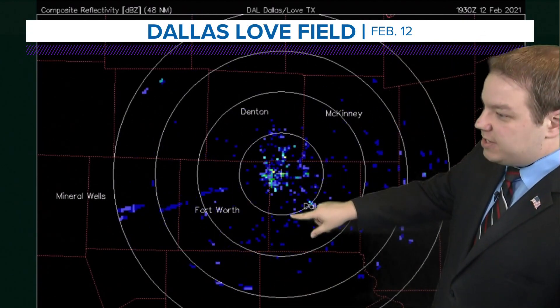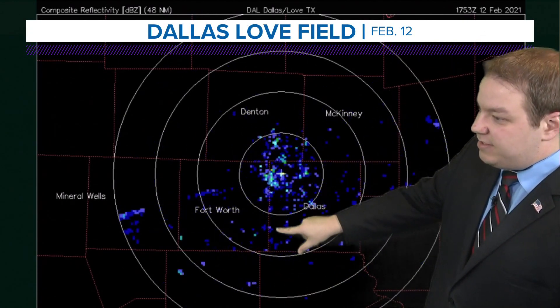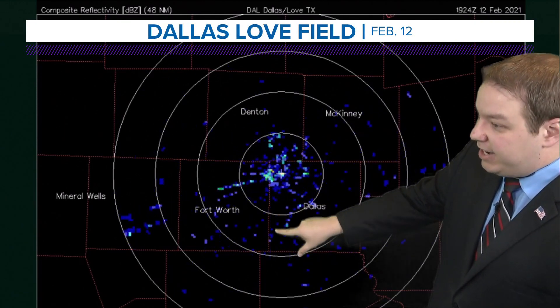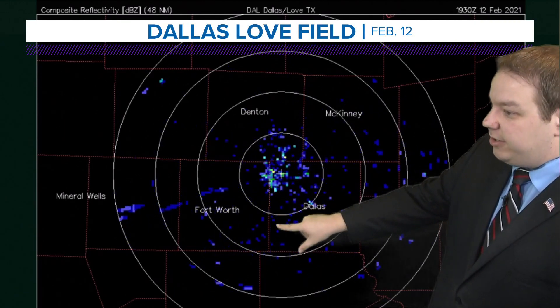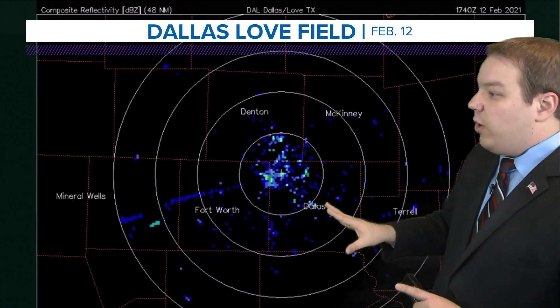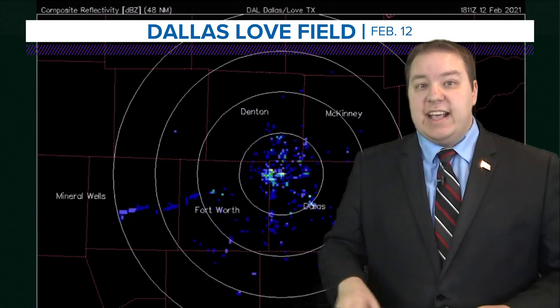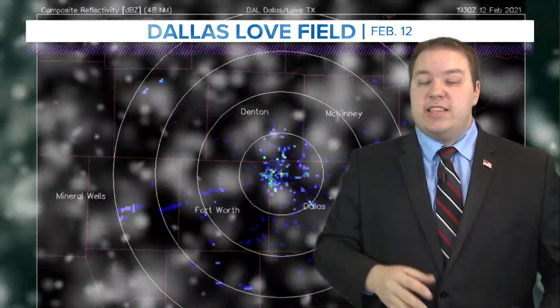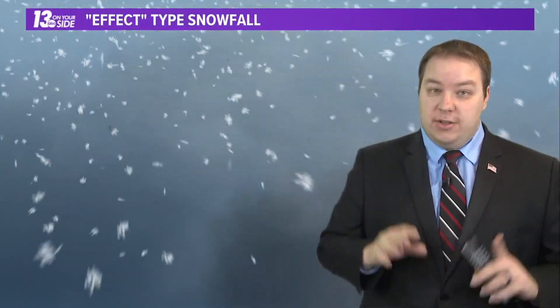But then you saw this little band right between Dallas and Tarrant County. It kind of showed up as a little line going north to south. It didn't quite fit the mold as the rest of the snow across the region. So that's what we think was the airplane effect snow.